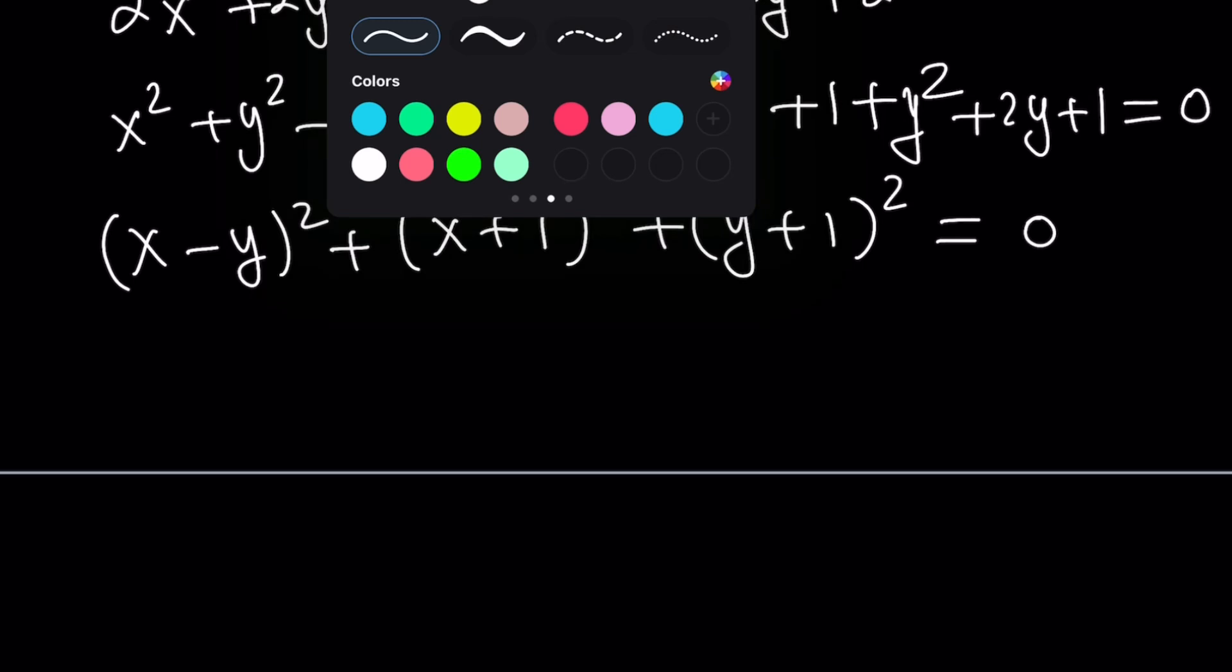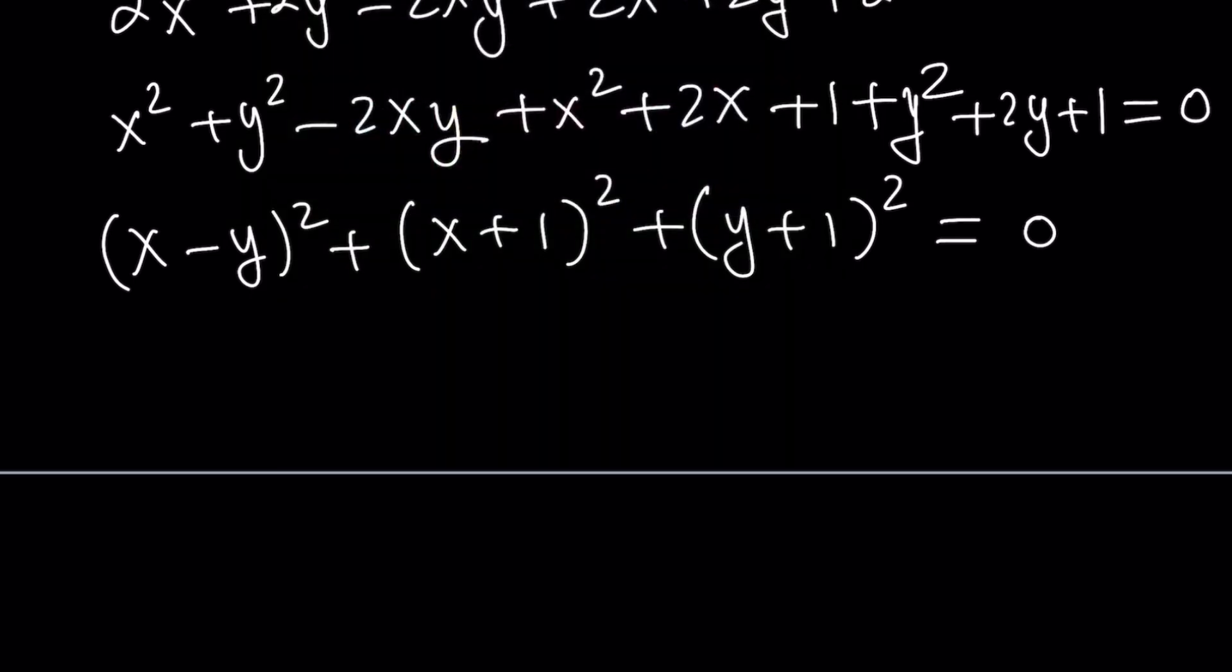Otherwise, you can't get 0 by adding squares because squares cannot be negative. This has to be 0, this has to be 0, and this has to be 0. That implies x equals y equals negative 1.